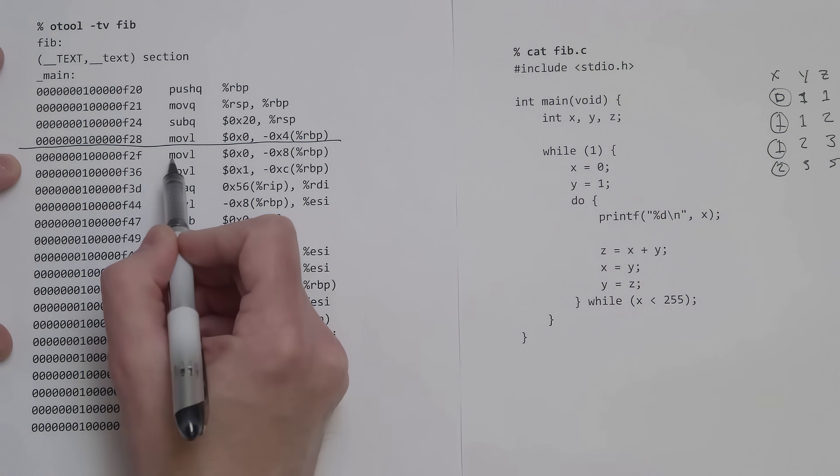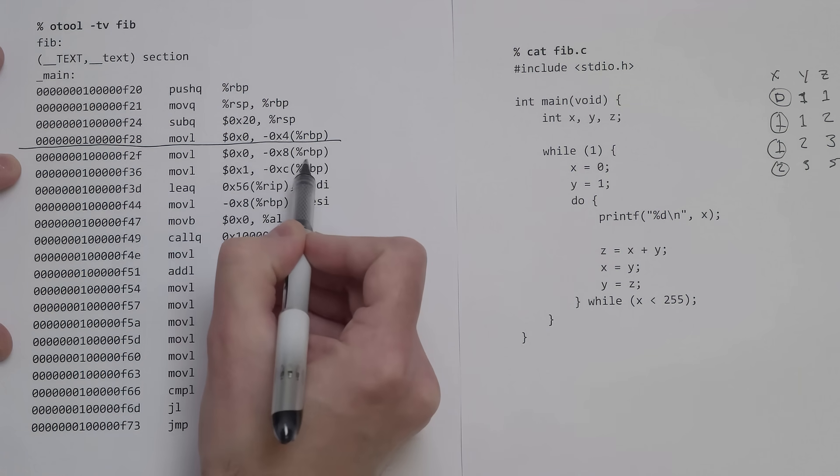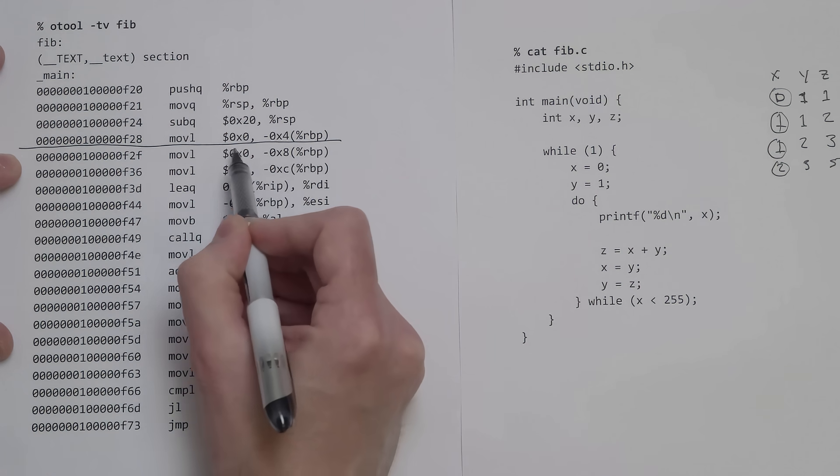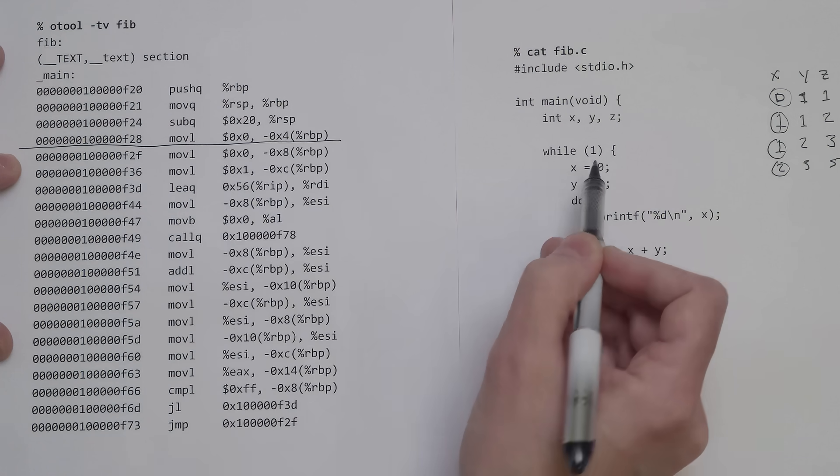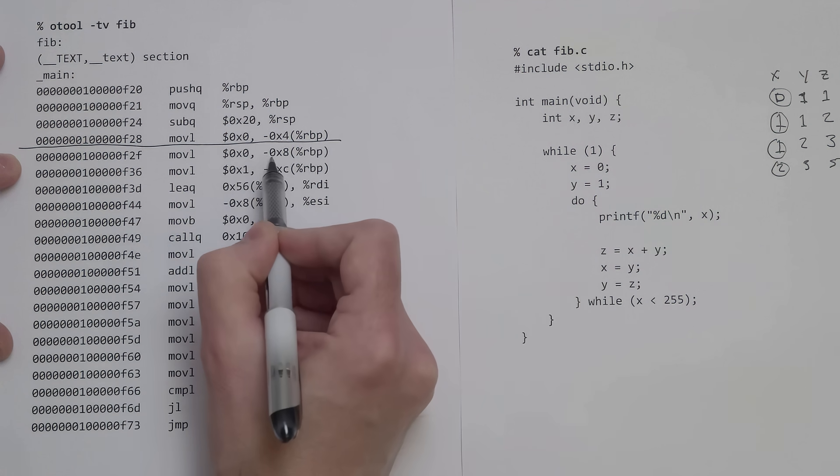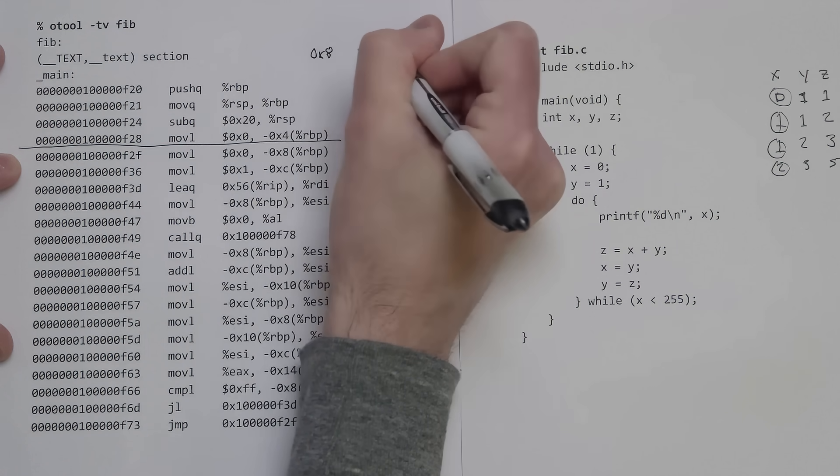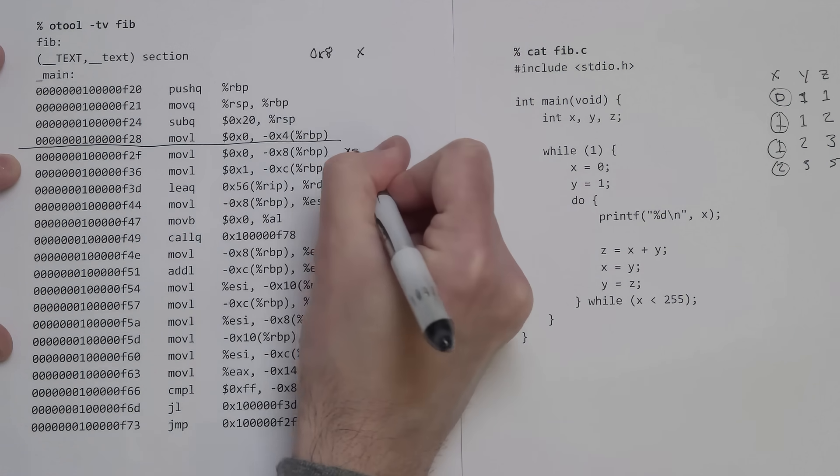This first line here, this move long, is moving the value 0 into this thing, which is an address offset. rbp is the stack base pointer, and this minus 8 is an offset referring to a location in memory. We're putting a 0 into this specific memory location, which is x equals 0. So 0x8 is the variable x.